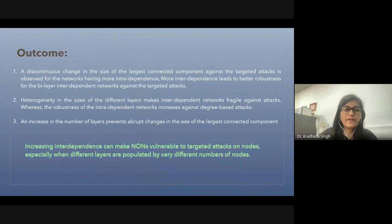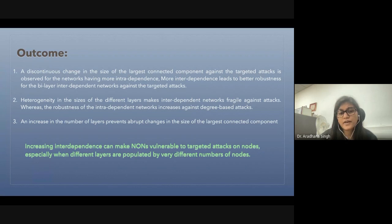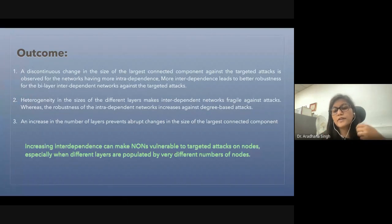The second result is that heterogeneity in the sizes of different layers makes interdependent networks more fragile against attacks. Robustness of intradependent networks increases against degree-based attacks, and an increase in the number of layers prevents abrupt changes in the sizes of the largest connected component. Overall, increasing the interdependence can make networks of networks vulnerable to targeted attacks on nodes, especially when there are very different numbers of nodes in different layers.